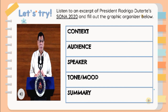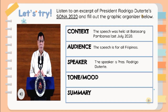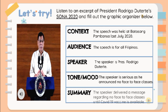Now let's try to identify and make inferences using the CASTS method. Context: The speech was held at Batasang Pambansa last July 2020. Audience: The speech is for all Filipinos. Speaker: The speaker is President Rodrigo Duterte, and it is about SONA 2020. Tone and Mood: The speaker is serious as he announced new face-to-face class policies. Summary: The speaker delivered a message regarding the suspension of face-to-face classes until a COVID-19 vaccine is available.